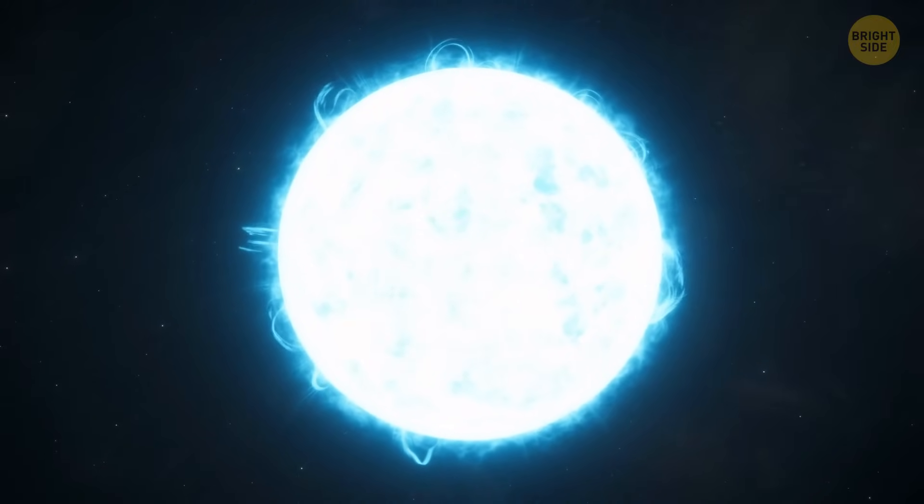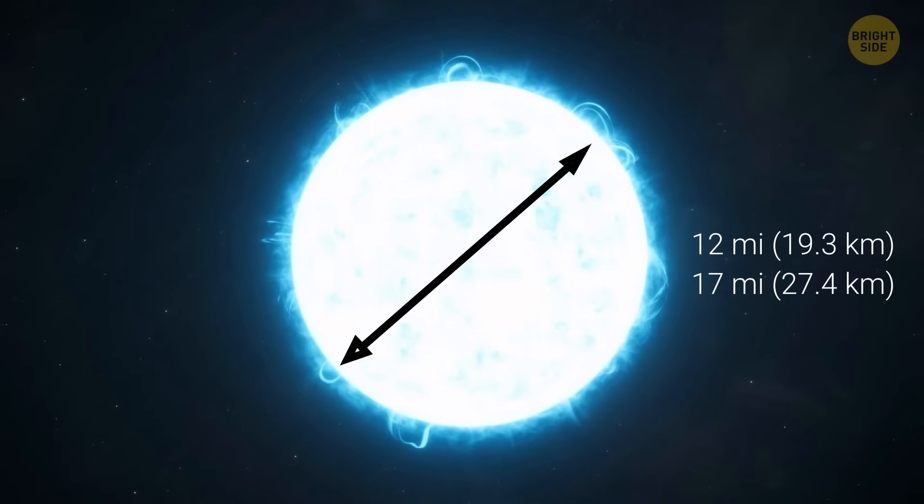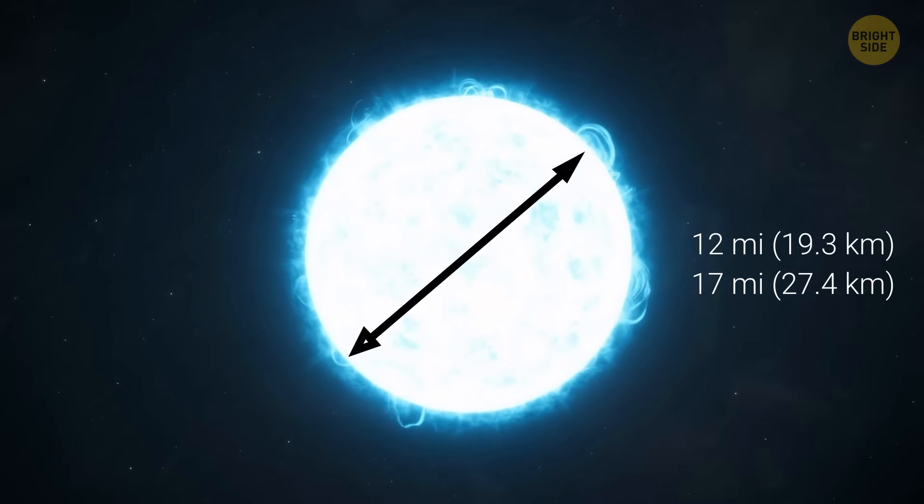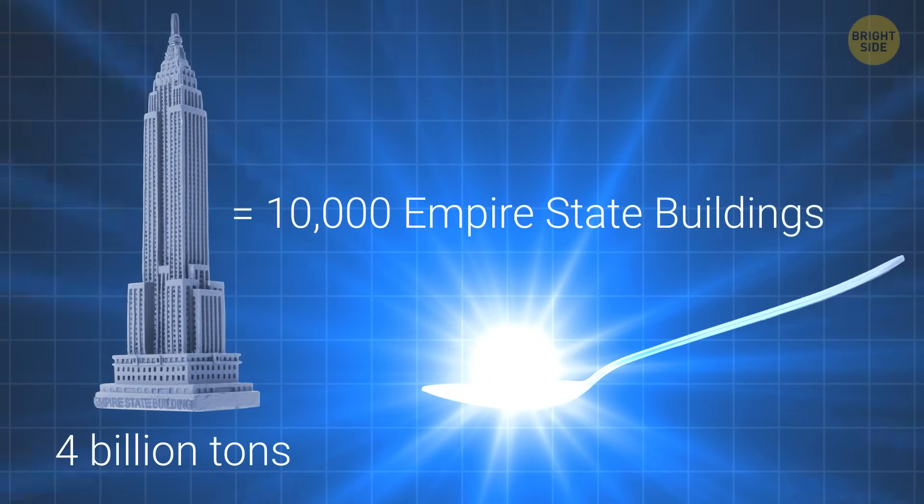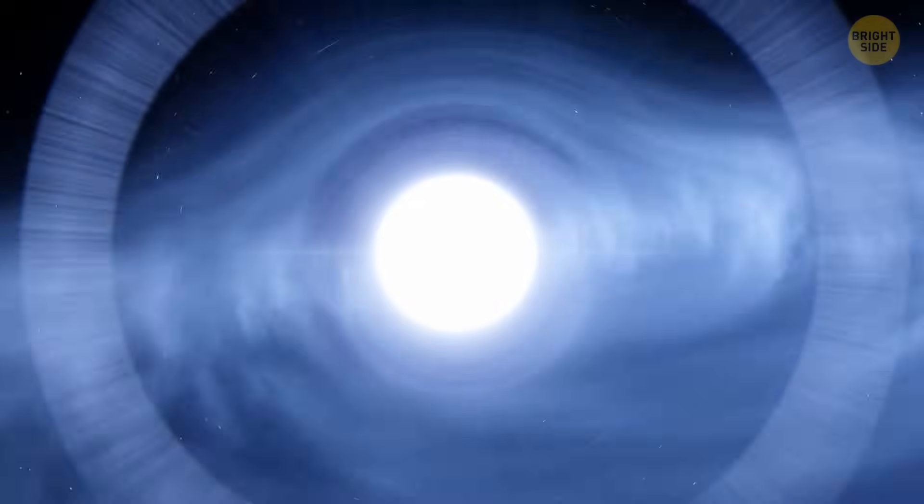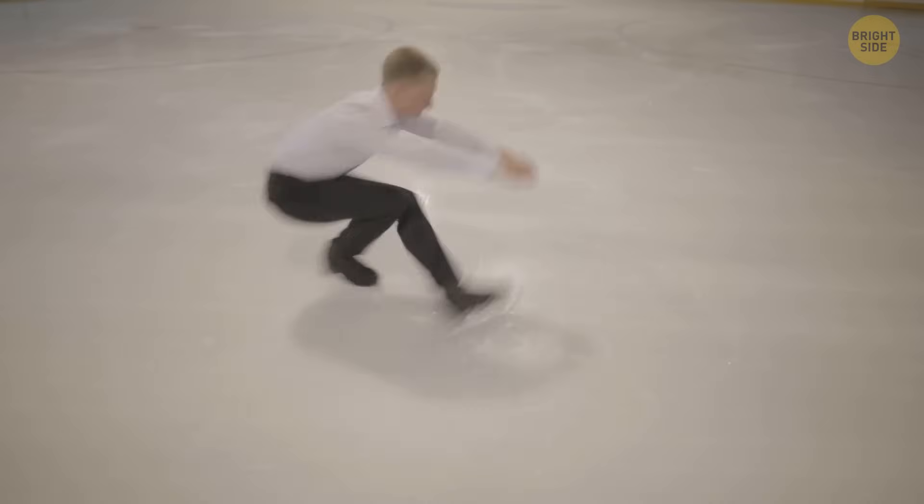What's left behind is the star's core. But now, it's crushed down to an incredibly small size, about 12 to 17 miles across. It's roughly the size of a city. This dense core is known as a neutron star. The material in a neutron star is so dense that just a teaspoon of it would weigh as much as 4 billion tons, like 10,000 Empire State Buildings. And all this collapse sets off a trigger, causing the neutron star to spin super fast, creating a pulsar. It's kind of like when an ice skater spins faster when they pull their arms in.